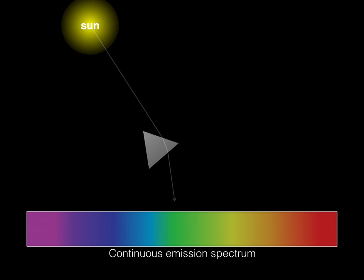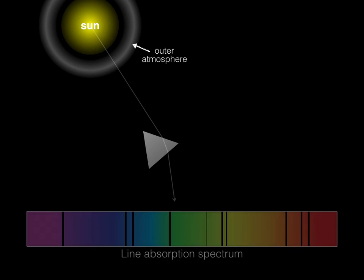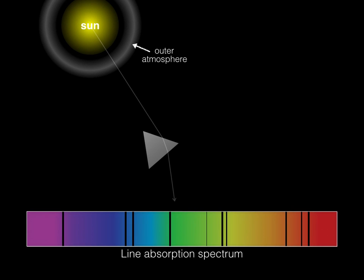Now, what I didn't include in this diagram is the sun's outer atmosphere, which consists of cooler gas, mainly hydrogen. When the light from the sun passes through its outer atmosphere, certain wavelengths of light are absorbed, creating black lines in the continuous spectrum. This produces what's known as a line absorption spectrum.